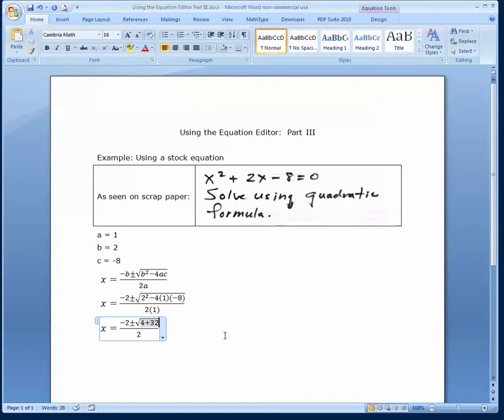In the next step, we just did some cleaning up. We changed the 2 times 1 on the bottom to 2, and the 2 squared we turned into 4. And minus 4 times 1 is minus 4 times minus 8 is a positive 32. So this is what we have so far. We've got minus 2 plus minus the square root of 4 plus 32 divided by 2.